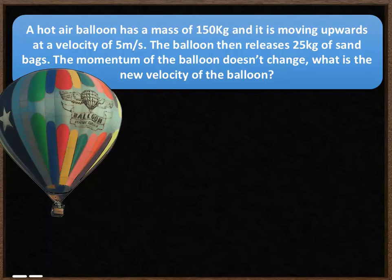Here's a more challenging question. A hot air balloon has a mass of 150 kilograms and is moving upwards at 5 meters per second. It then releases 25 kilograms of sandbags. The momentum of the balloon doesn't change at this point — it stays exactly the same — but the mass decreases and the velocity will change. Work out the new velocity.